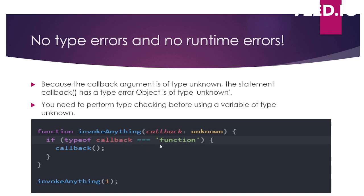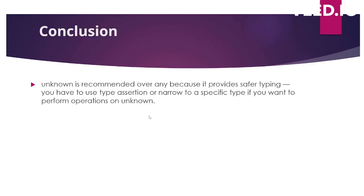This has made the code safer, and we are able to catch the issue at compile time instead of getting runtime errors. The conclusion is clear: unknown is more recommended over any because of the greater type safety it provides. We are able to catch issues at compile time itself instead of getting errors at runtime. That's the difference between any and unknown, when to use each, and how to do type checking when using unknown.